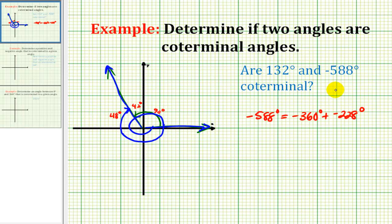So yes, these two angles are coterminal. So the idea here is if two angles are coterminal, if you start with one of them, you would have to add and subtract multiples of 360 degrees to obtain the other coterminal angles.